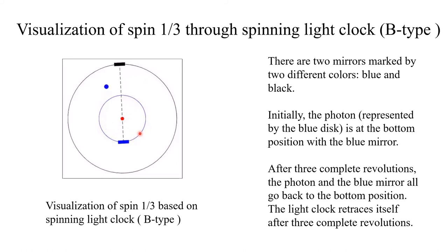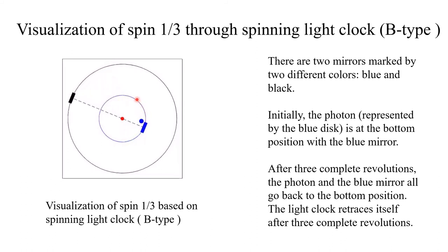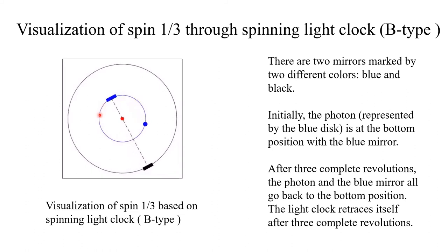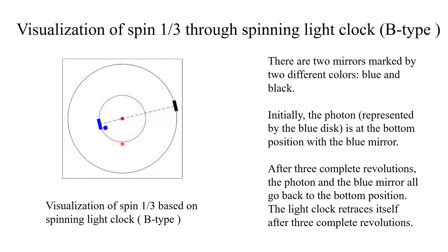Here we have one complete revolution. Next, we proceed to one and a half revolutions, then two complete revolutions. After each step, the clock continues spinning through these intermediate positions.